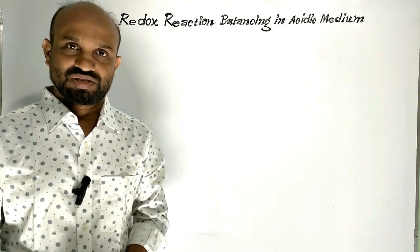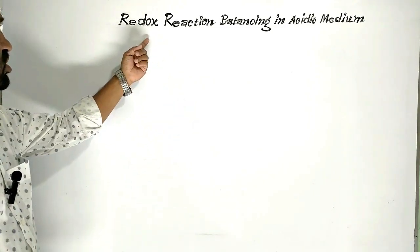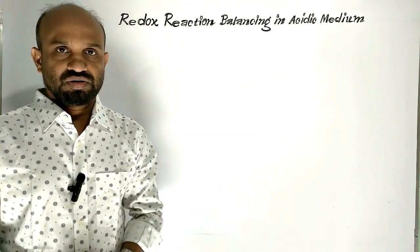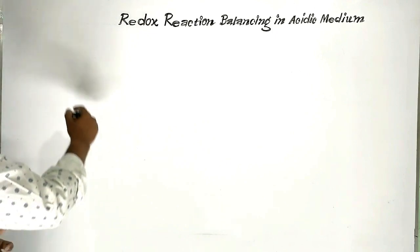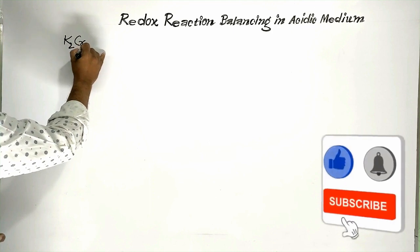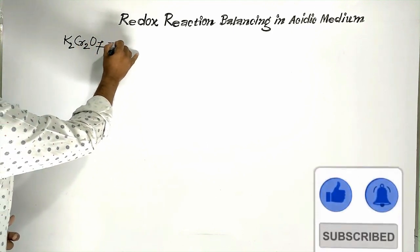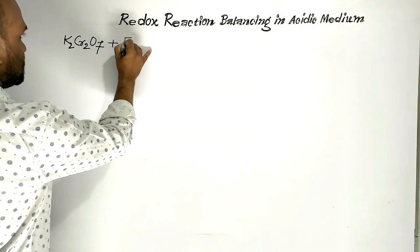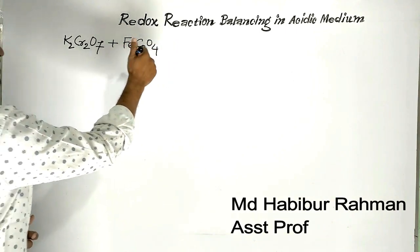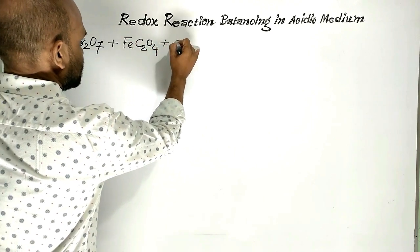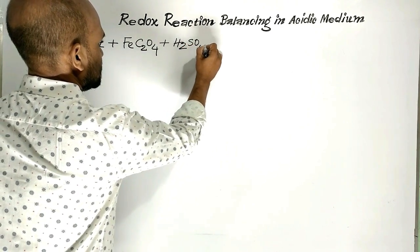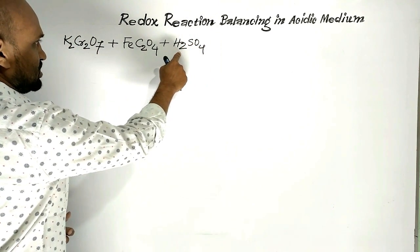Today I am going to discuss Redox Reaction Balancing in Acidic Medium. Let us see today's reaction. The reactants are Potassium Dichromate and Ferrous Oxalate. The reaction is conducted in Acidic Medium — suppose Sulfuric Acid.